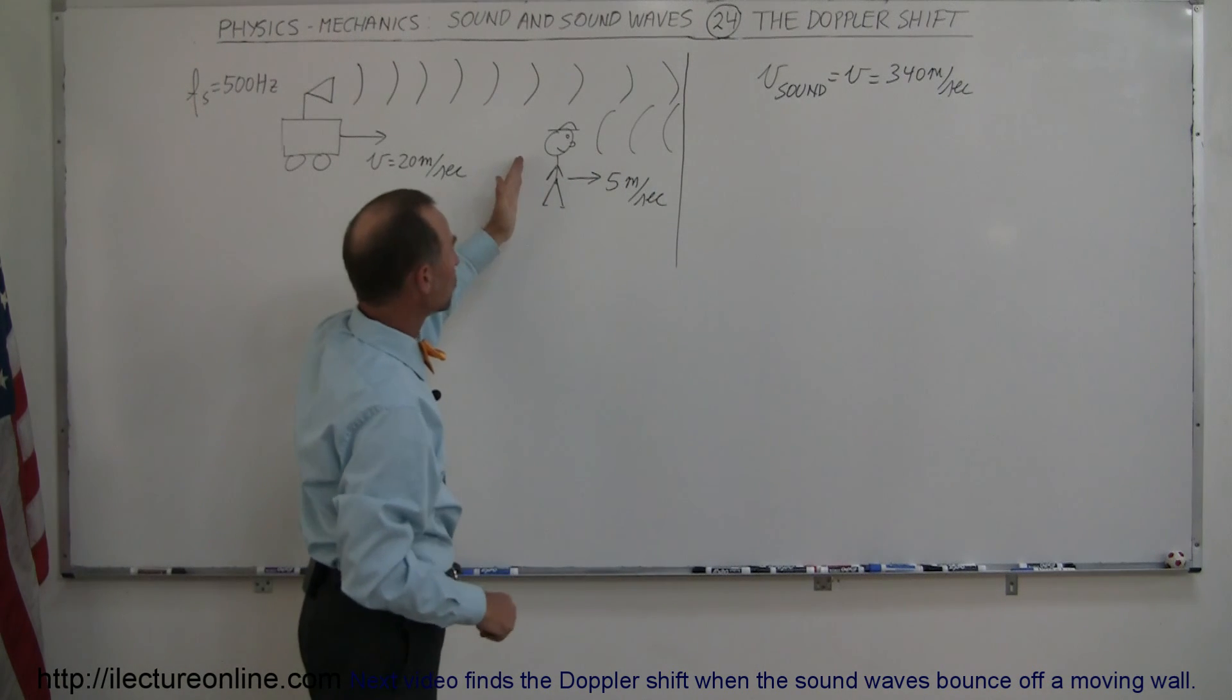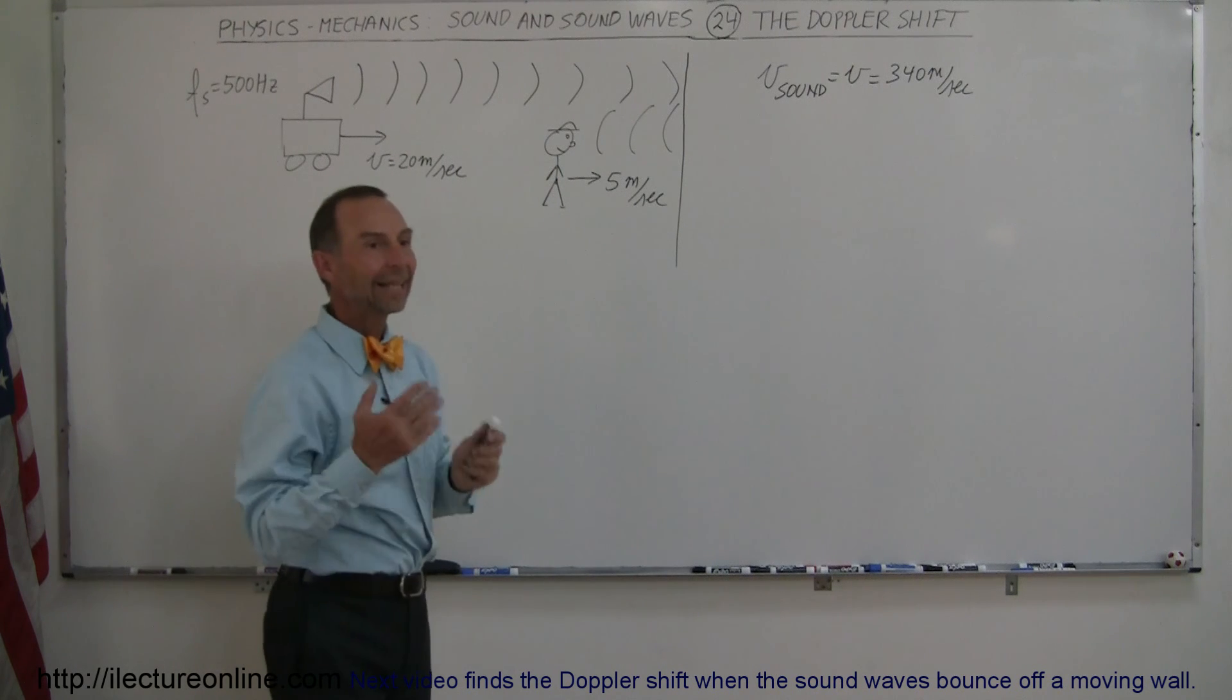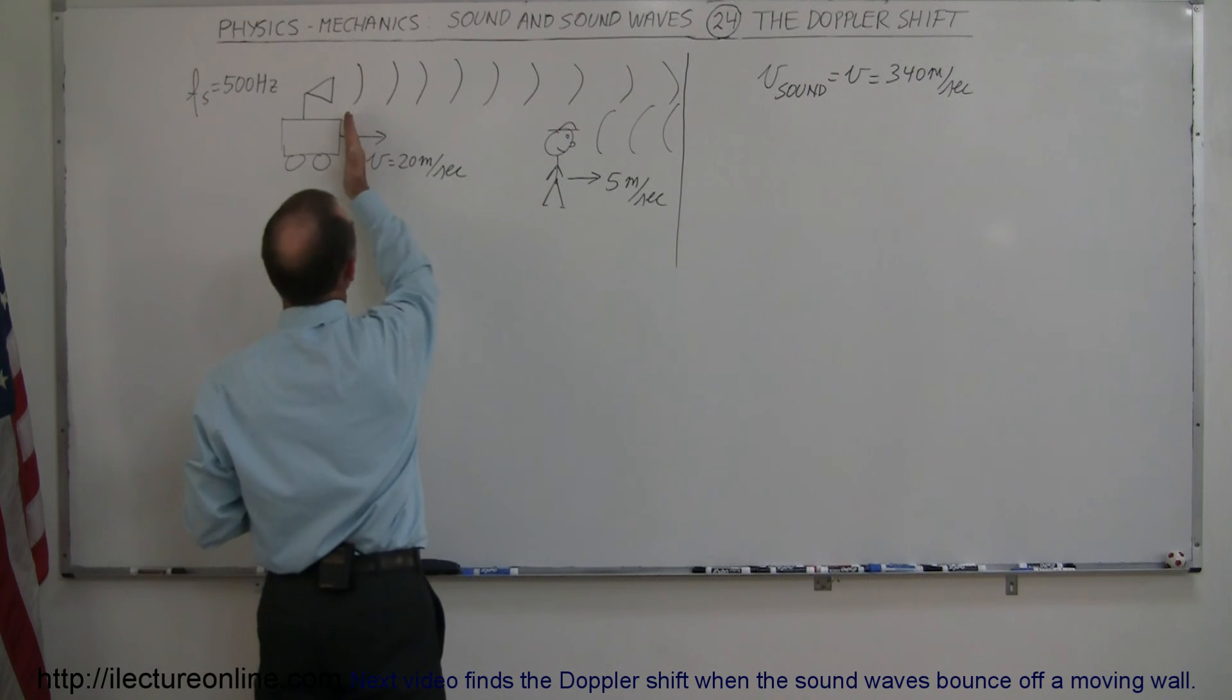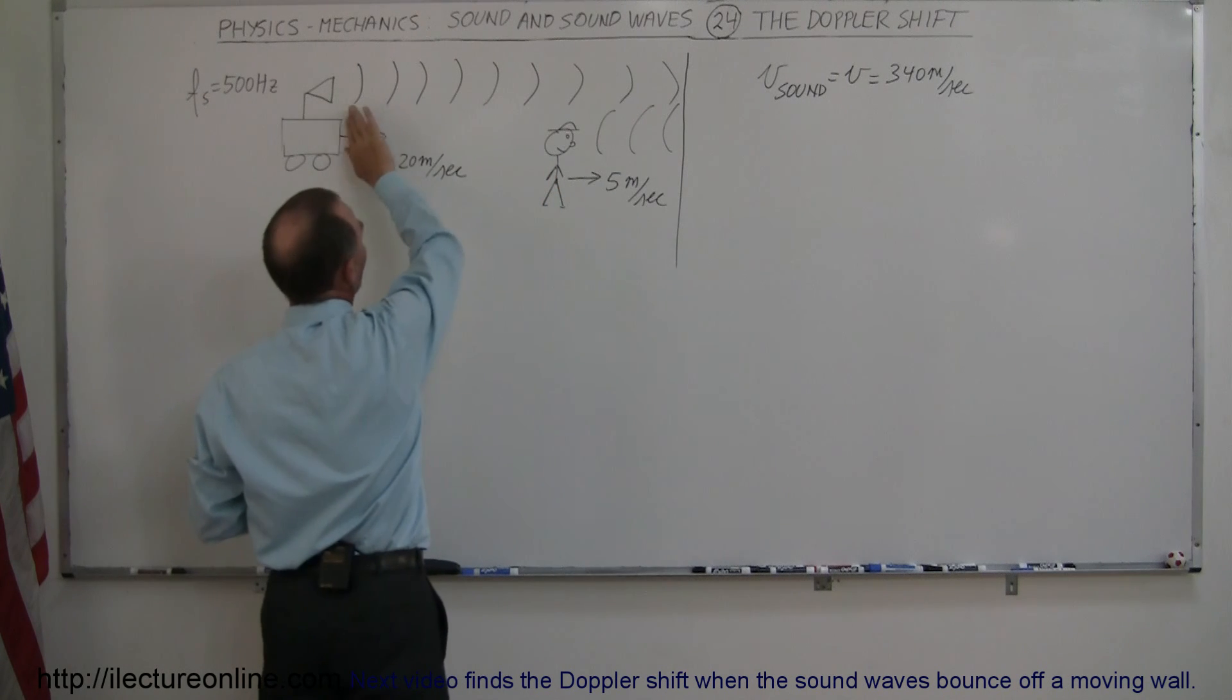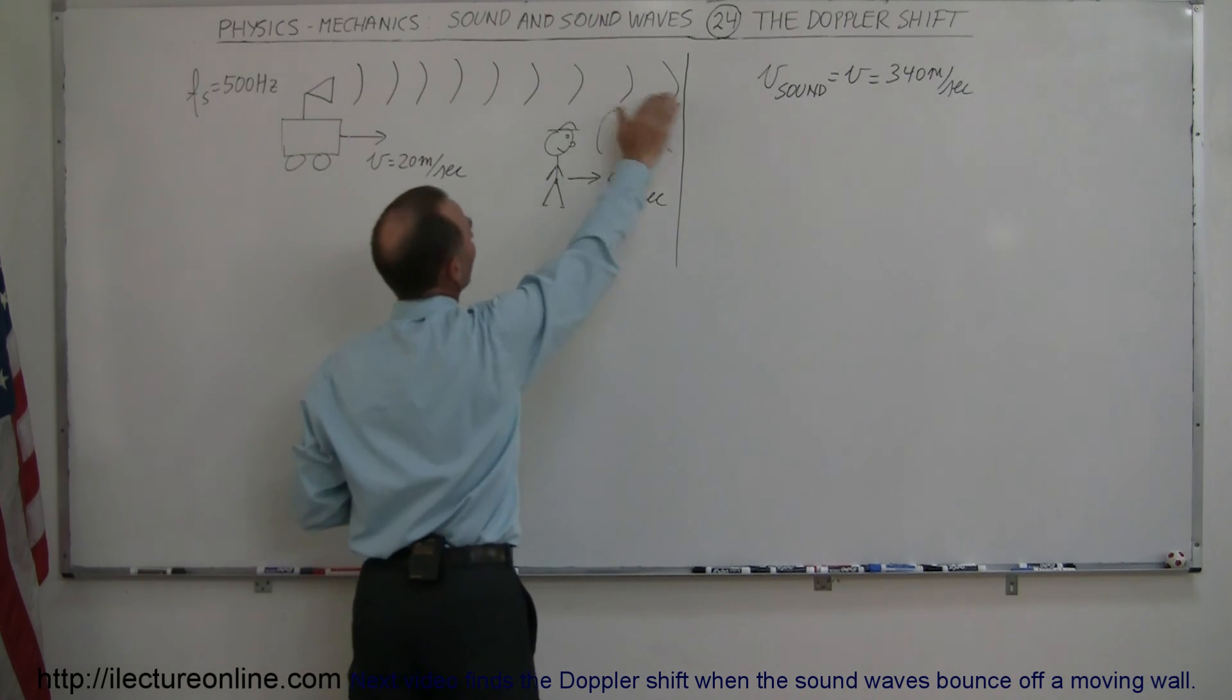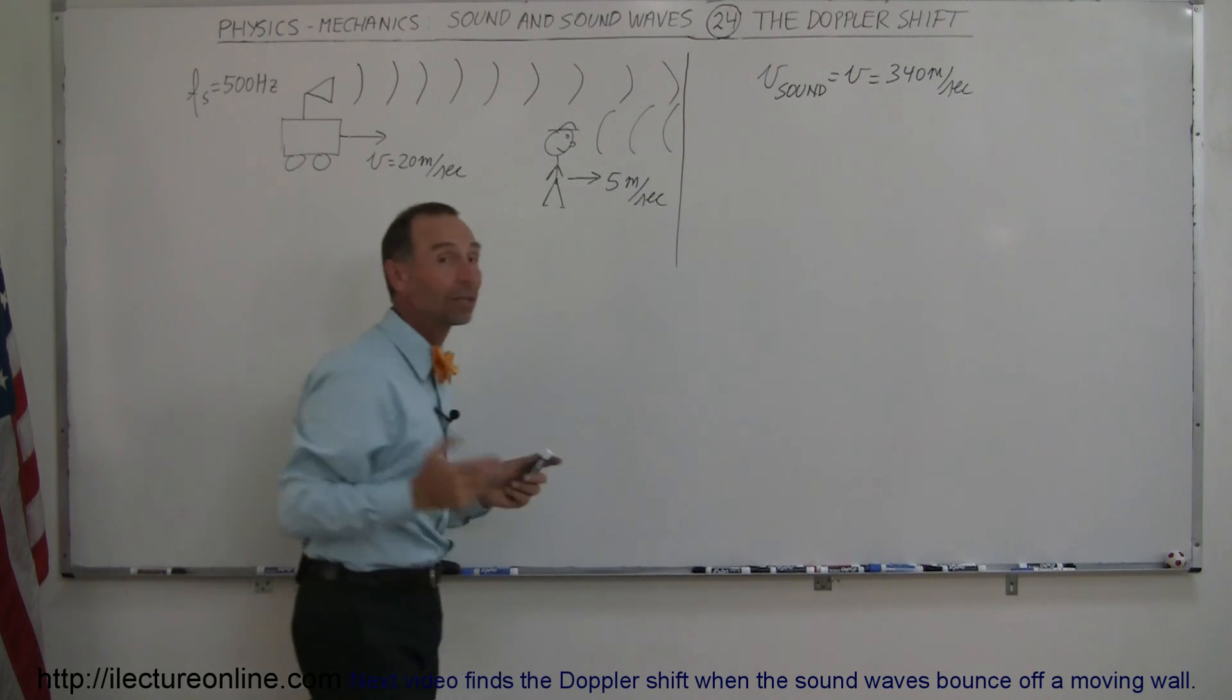There's an observer moving away from the source, moving towards the wall. Let's say that for some reason he's shielded from the sound coming from behind so he doesn't hear the source as it's moving this way, but he does hear the sound waves as they bounce off the wall and come back.